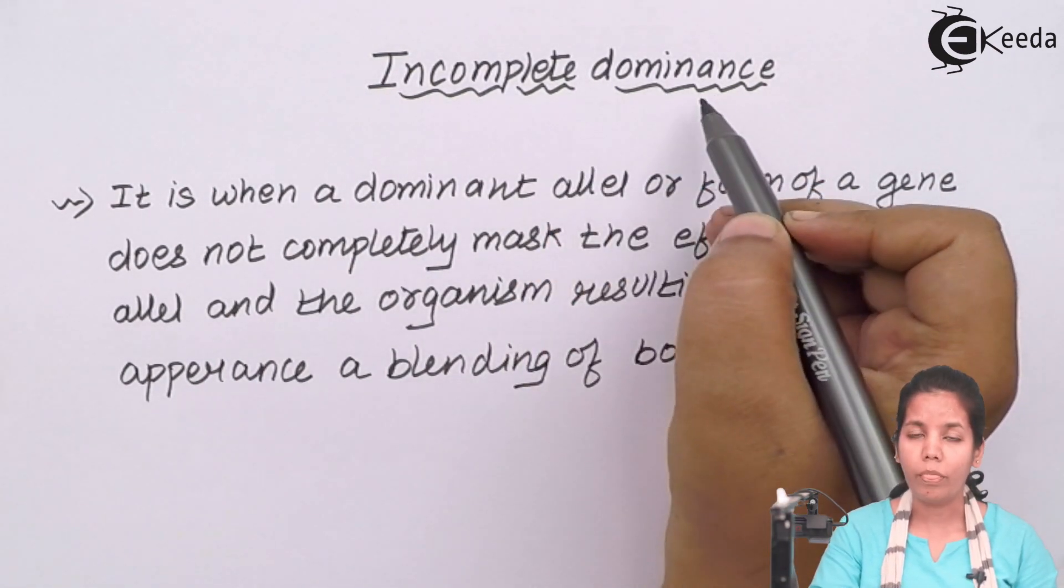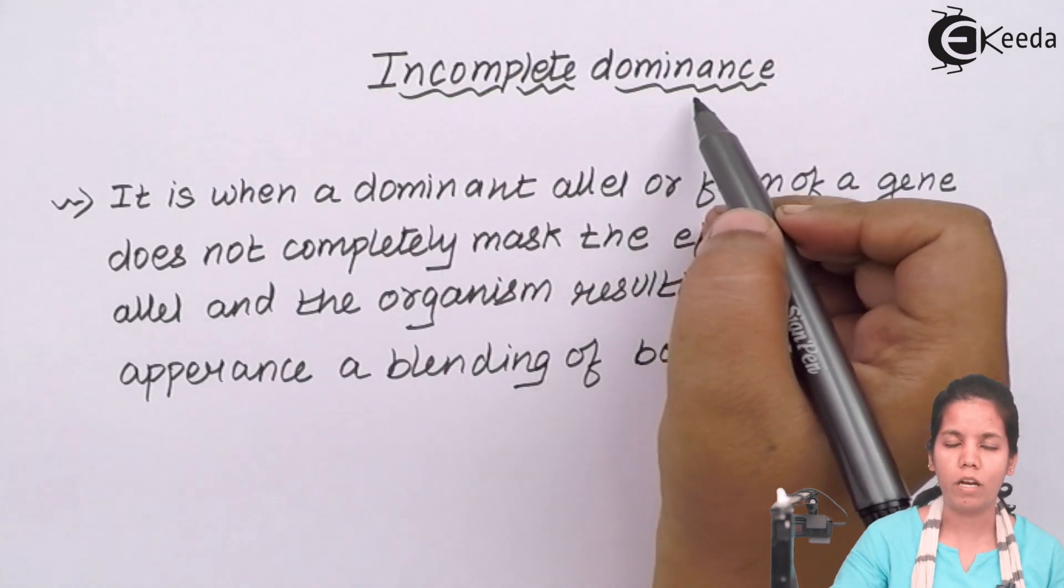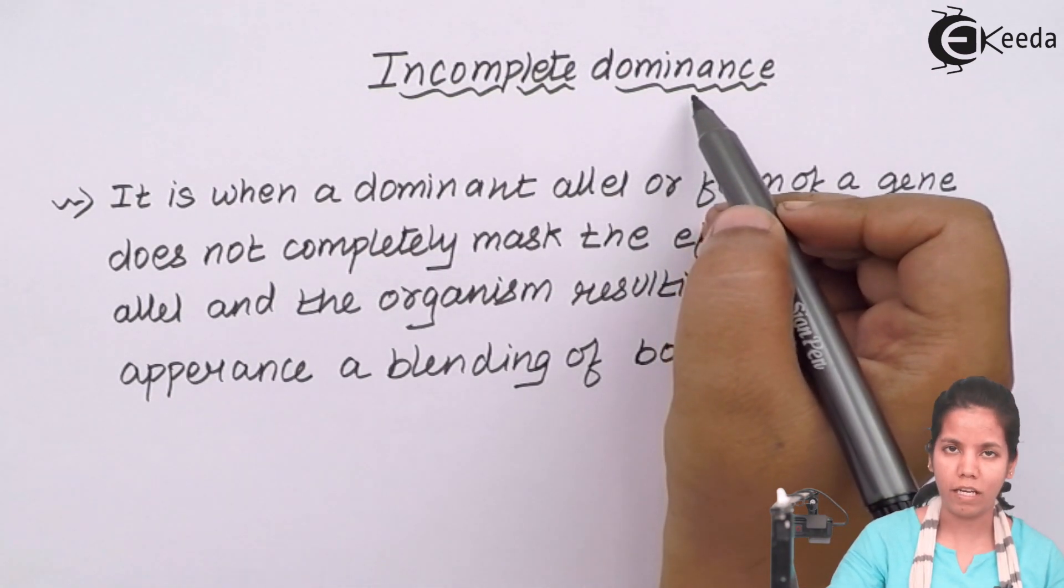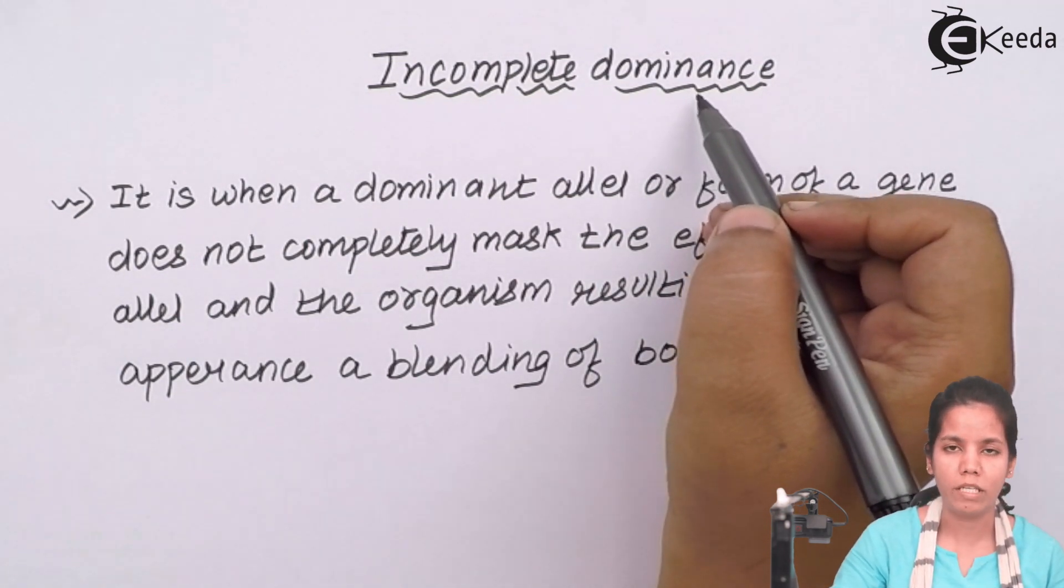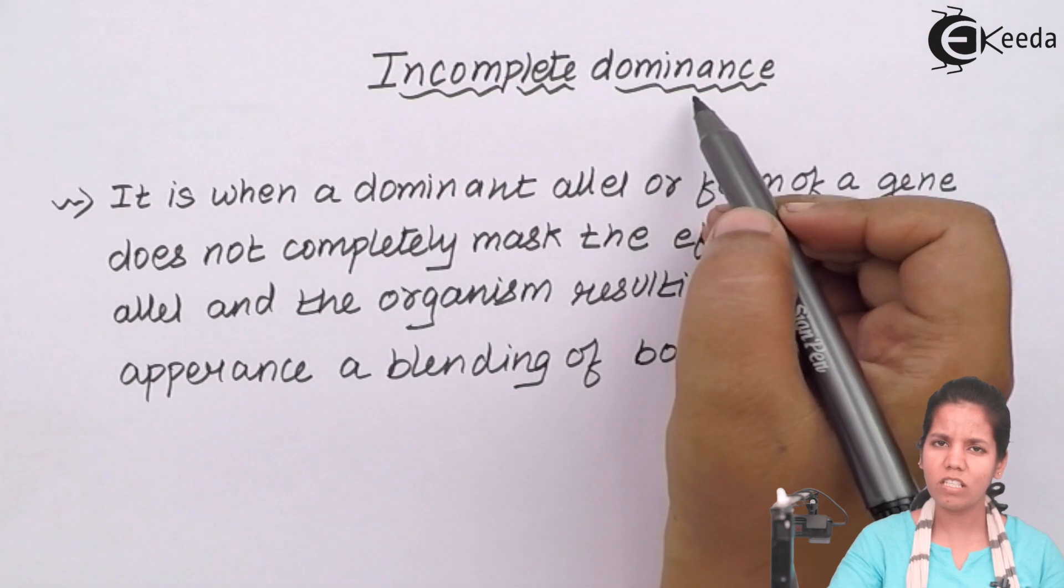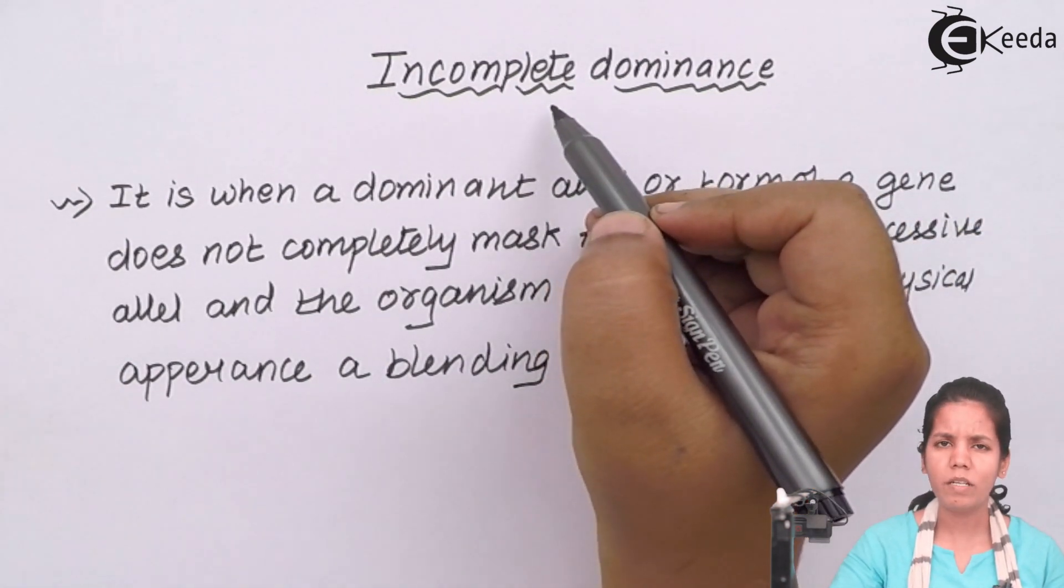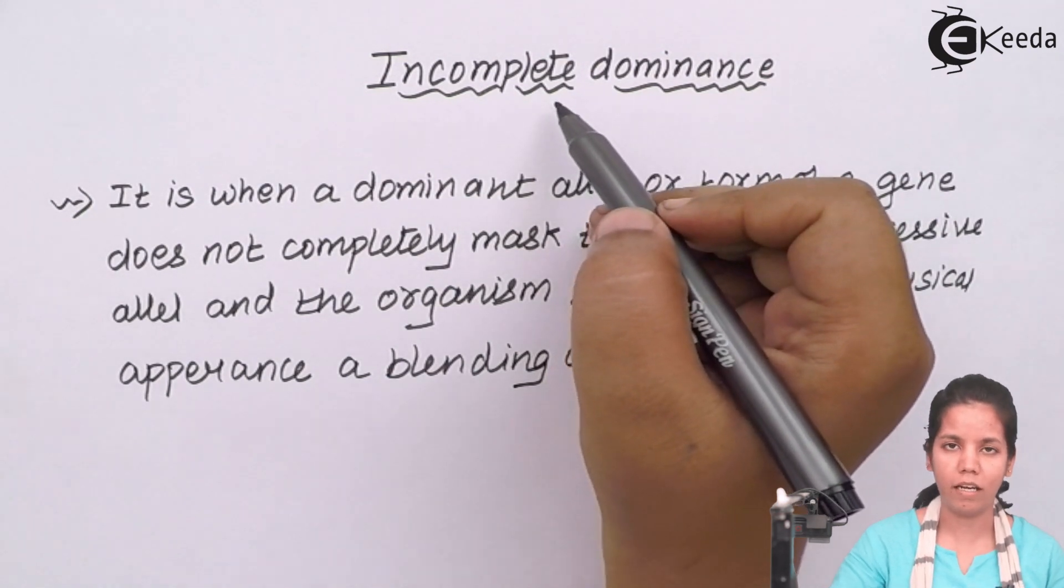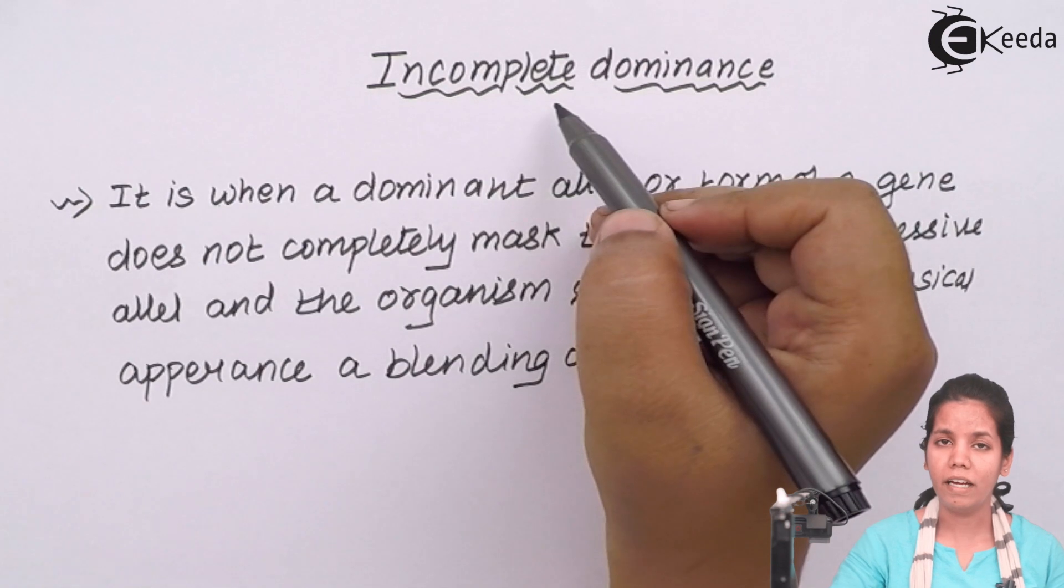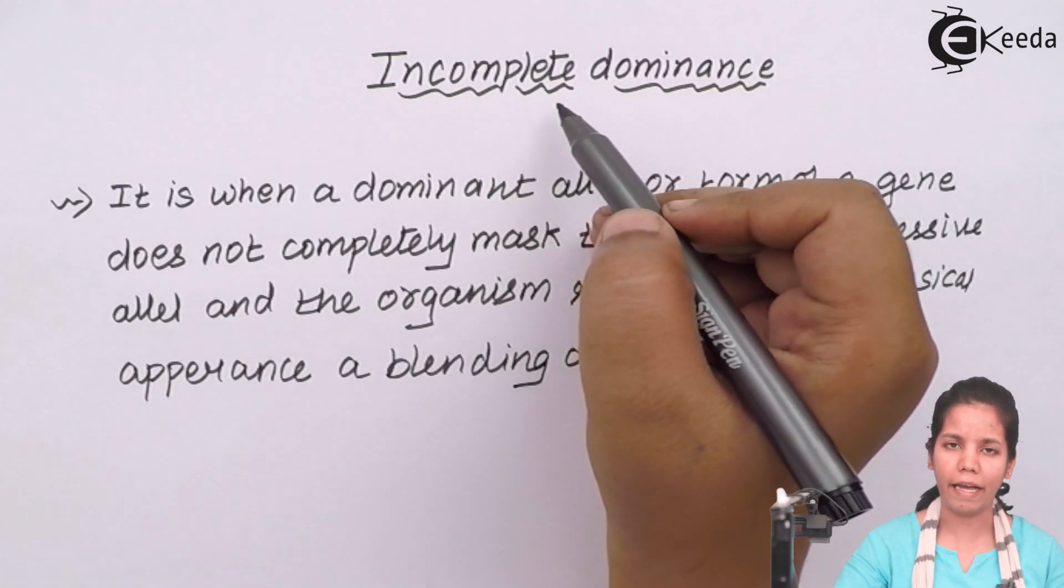Incomplete dominance. Now the law of dominance clearly states that the strong one, whether it is homozygous strong or heterozygous strong, the dominant allele will always be expressed. This is just a flip to the law of dominance, which is incomplete dominance, which in simple language states that the dominant one will be seen in any generation but it will not kill or suppress or hide its recessive counterpart.